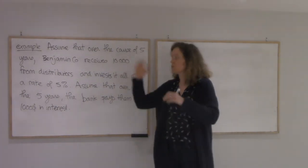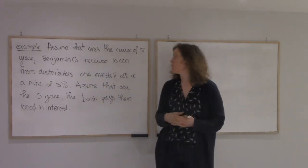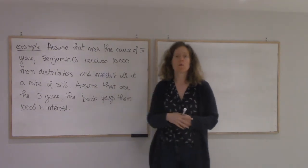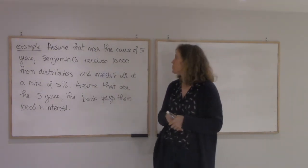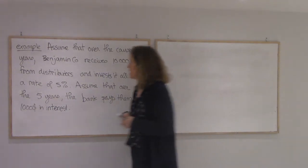Alright, in this video we'll solve this problem. I'm assuming that the company Benjamin Co is getting money over the course of five years as money flow from investors.